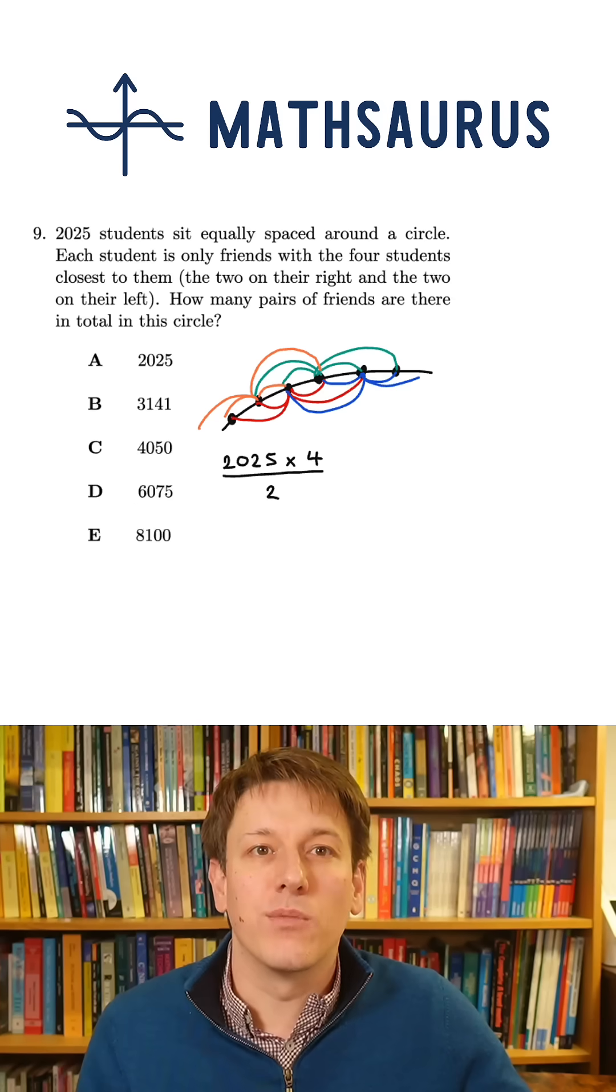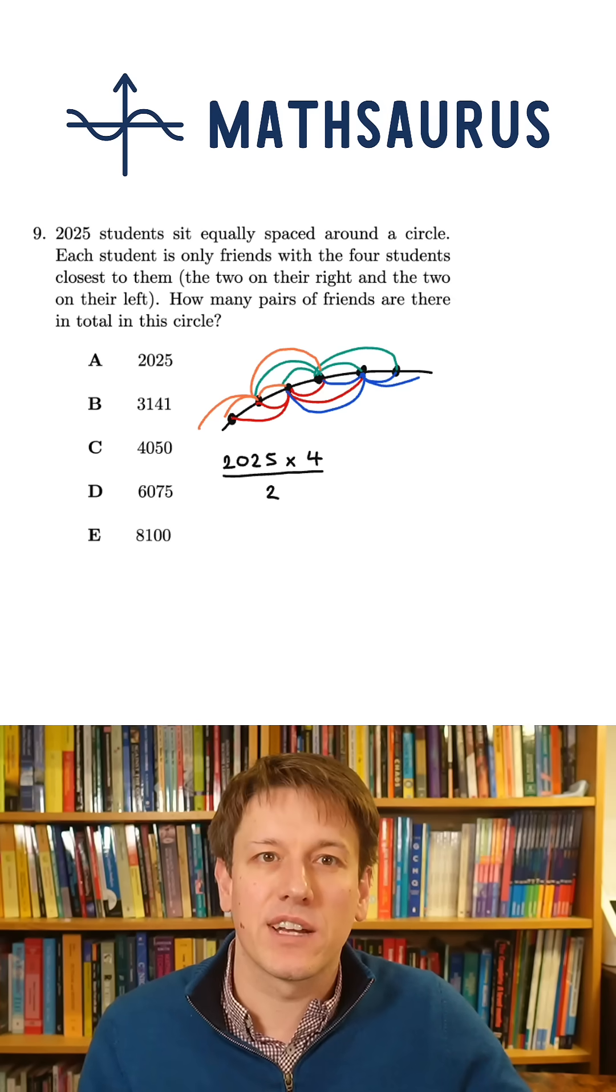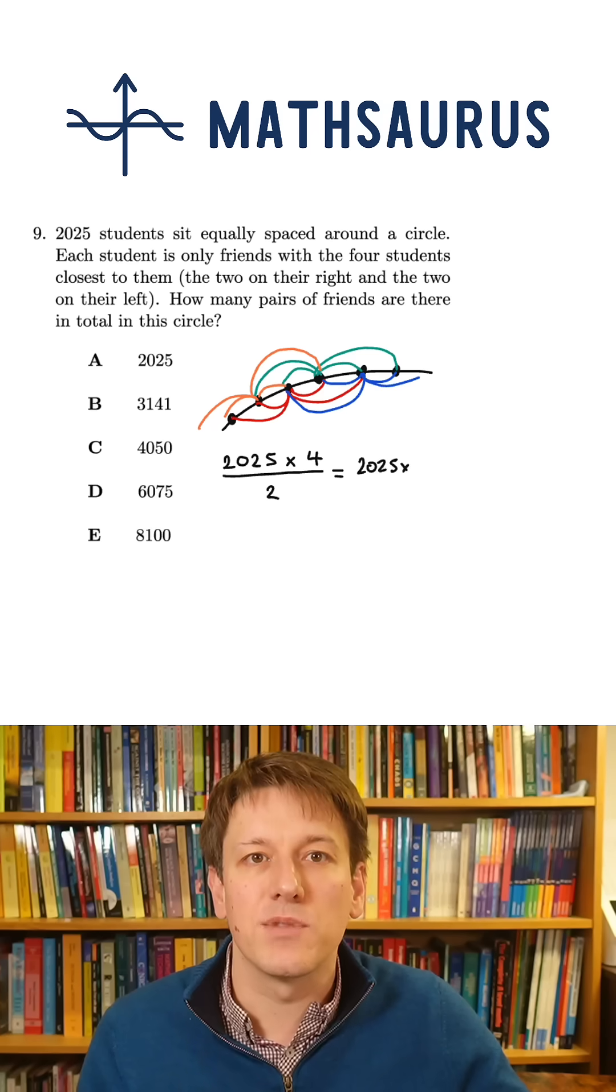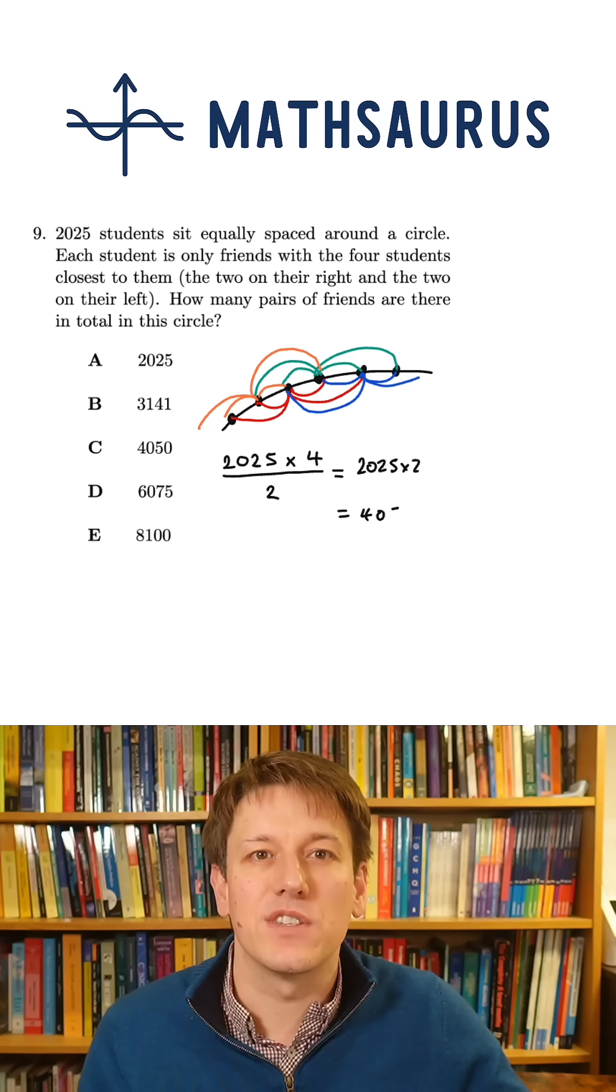Now don't multiply 2025 by four and divide it by two, just recognize that four divided by two is two. So I can just do 2025 times two and get the final answer here, which is 4050. And the answer here is C.